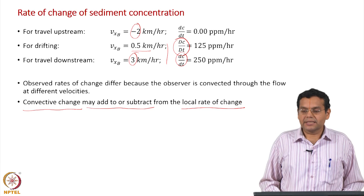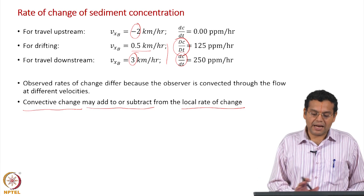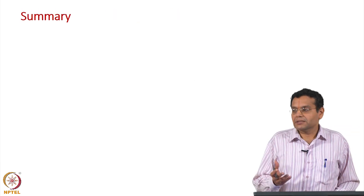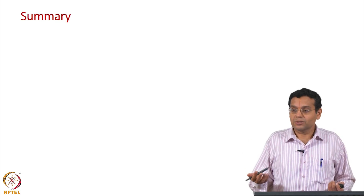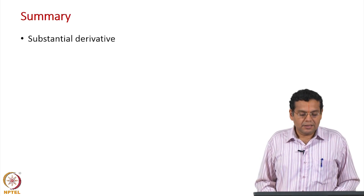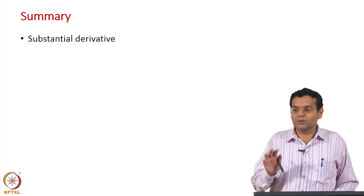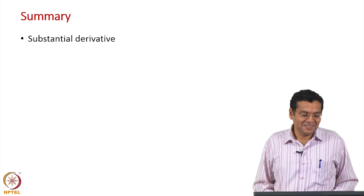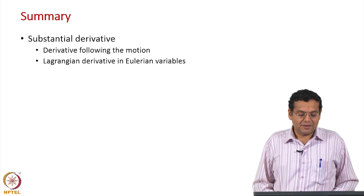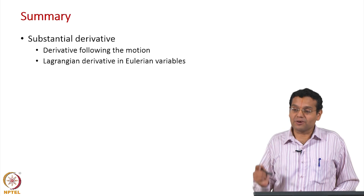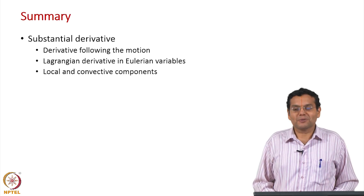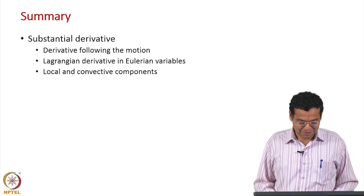This is a very nice example that illustrates several aspects of the substantial derivative and total derivative — applicable to measuring sediment concentration, fish concentration, pollutant concentration, or temperature. To summarize: we have discussed the substantial derivative — a derivative following the fluid motion — and more importantly, the Lagrangian derivative expressed in Eulerian variables. It has two components: the local component and the convective component. We will continue in the next lecture.